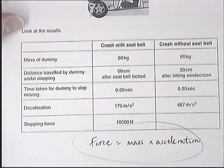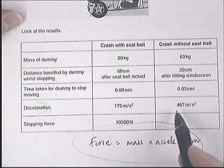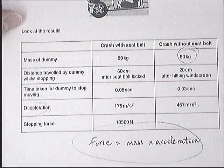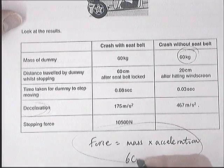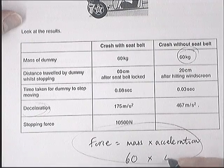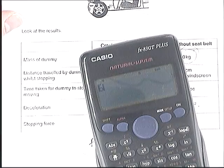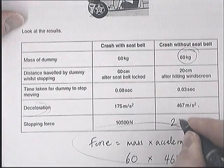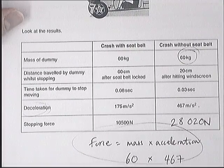Now that I've identified the equation, you can see you can use it here. I know it's a deceleration, but it's still a rate of change of speed, so it still works. The mass is the mass of the crash test dummy, so his stopping force is going to be 60 times 467 metres per second squared, which gives 28,020 — pretty much 28,000 Newtons.